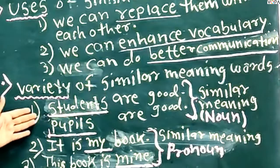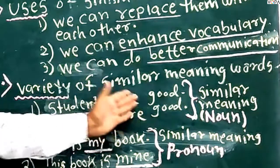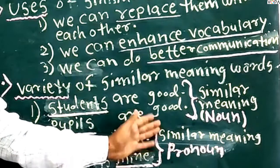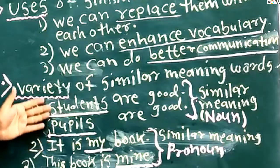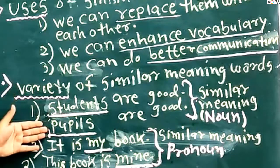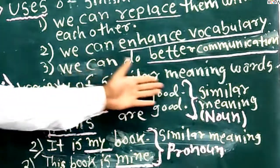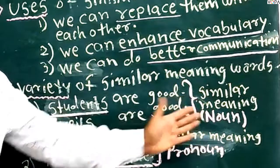Look at this first example. Students are good. Pupils are good. 'Vidyarthi sangalya aahe'. In this sentence, students and pupils are nouns, and these are similar meaning words. So we can say this is the example of similar meaning nouns.